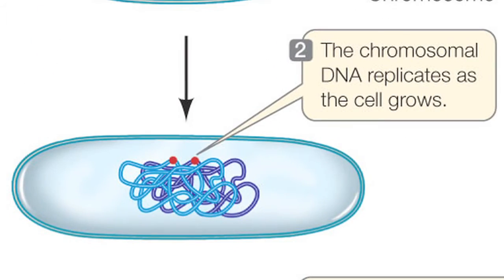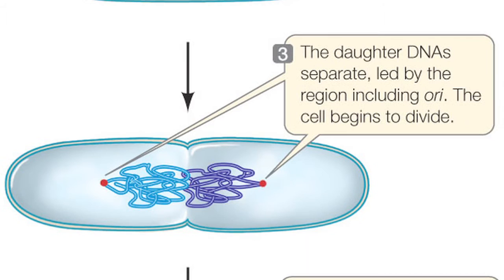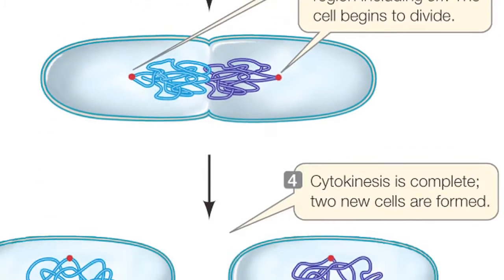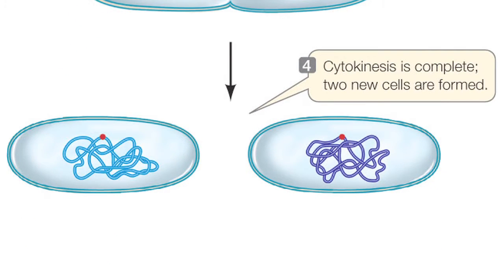Next, the chromosomal DNA replicates as the cell grows, leading to the separation of daughter DNAs. This causes the cell to begin to divide, as shown in step 3. In the final step, cytokinesis is complete as two new cells are formed.